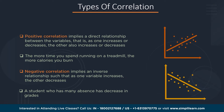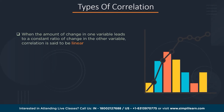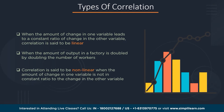Now let's discuss linear and nonlinear correlation. When a change in one variable leads to a constant ratio change in another variable, that relation is said to be linear. For example, a factory doubles its output by doubling the number of workers. Correlation is said to be nonlinear when the amount of change in one variable is not in a constant ratio to the change in the other — for example, the change in radius of a sphere and the change in its volume are not in the same ratio.